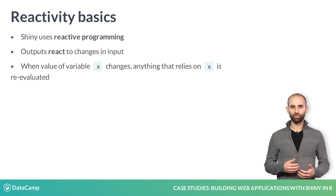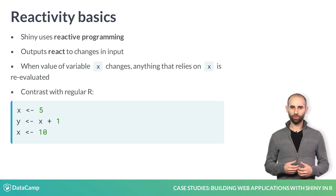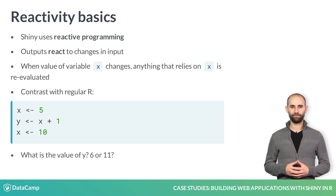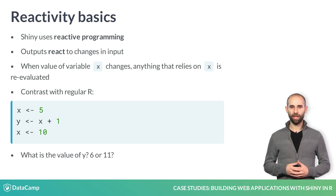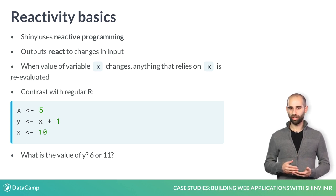This is very different from what you're used to in R. Consider this code: x equals 5, y equals x plus 1, then x gets 10. Normally, you would say that y has the value of 6. But if x and y are both reactive variables, then y would actually be 11, because y would update any time that x changes.